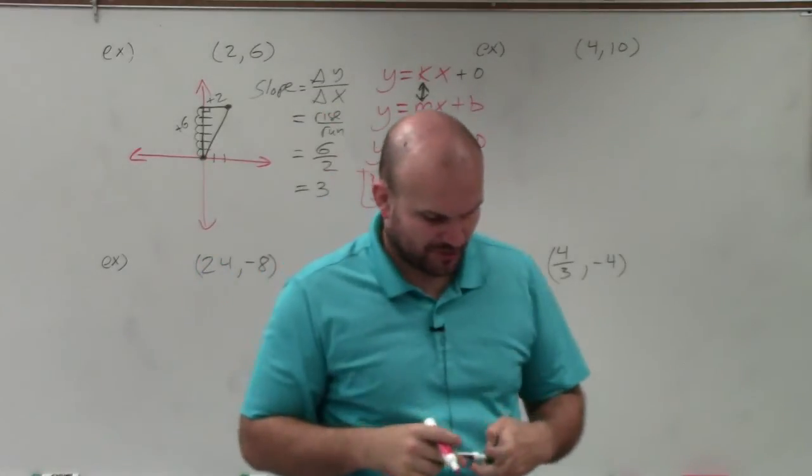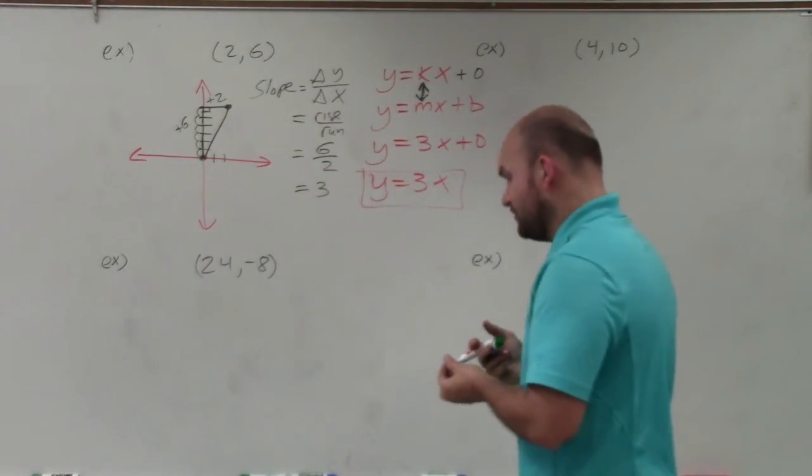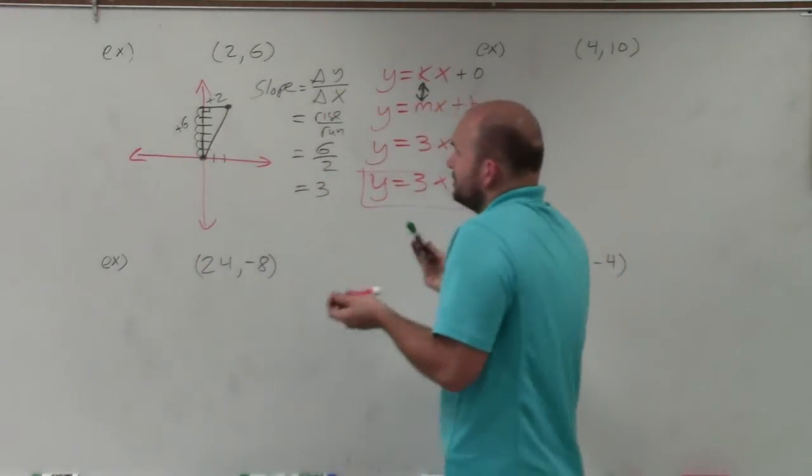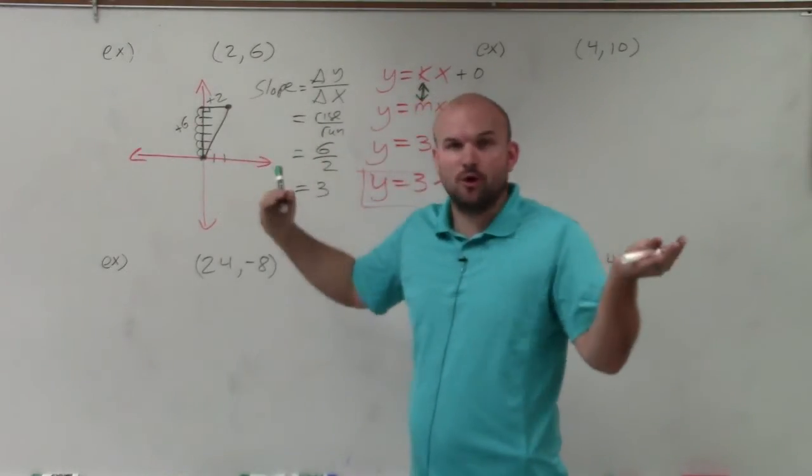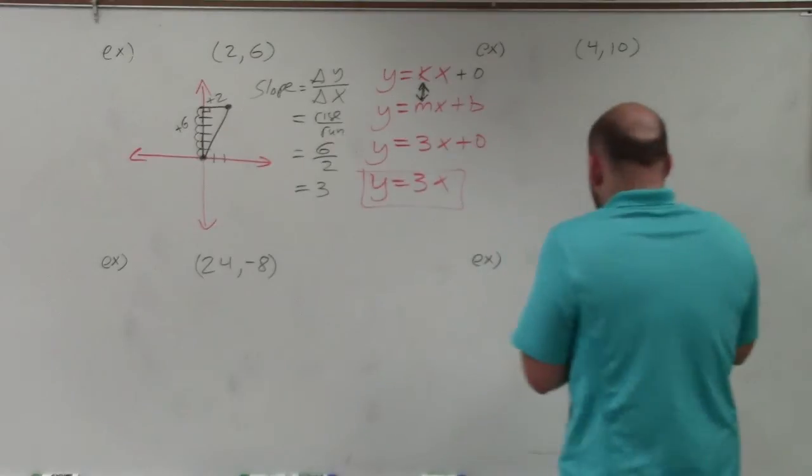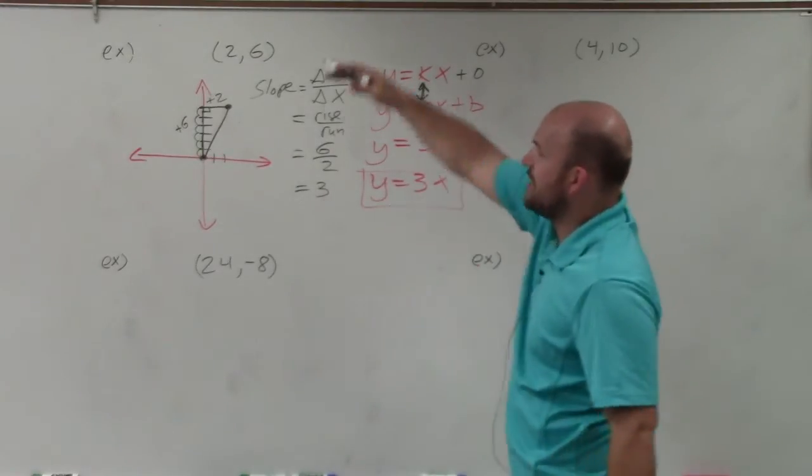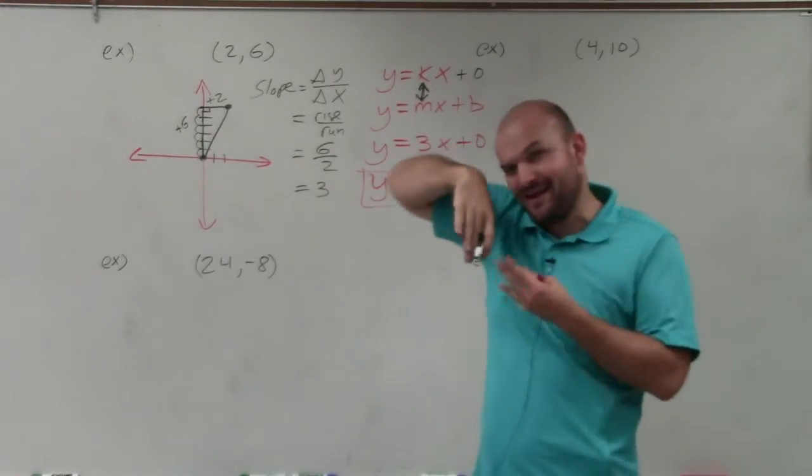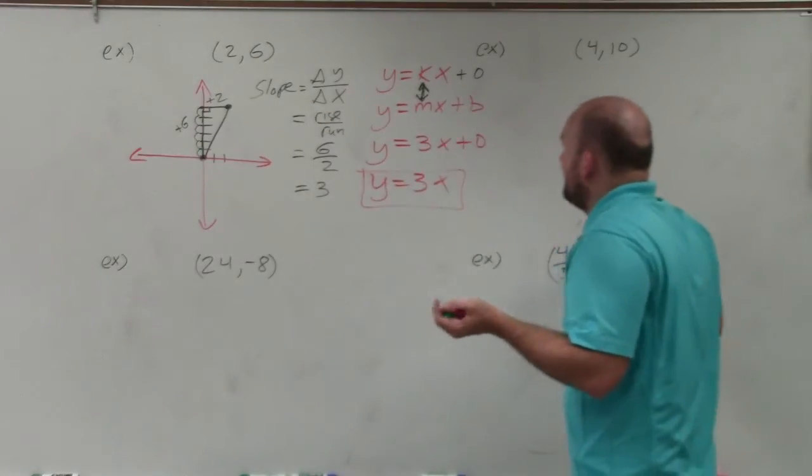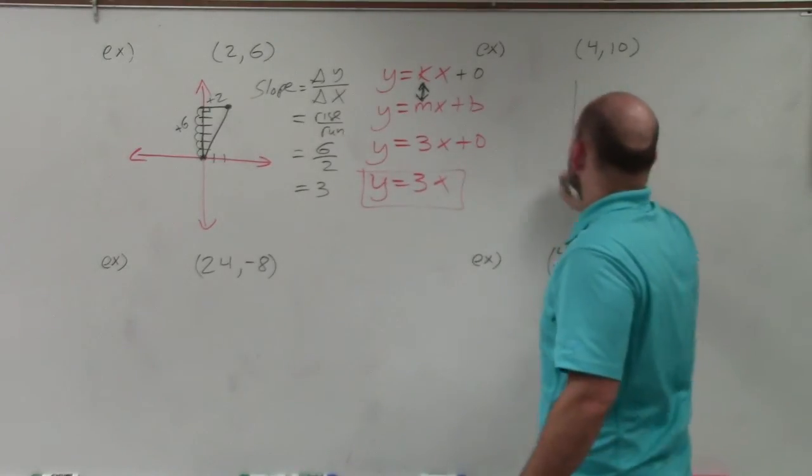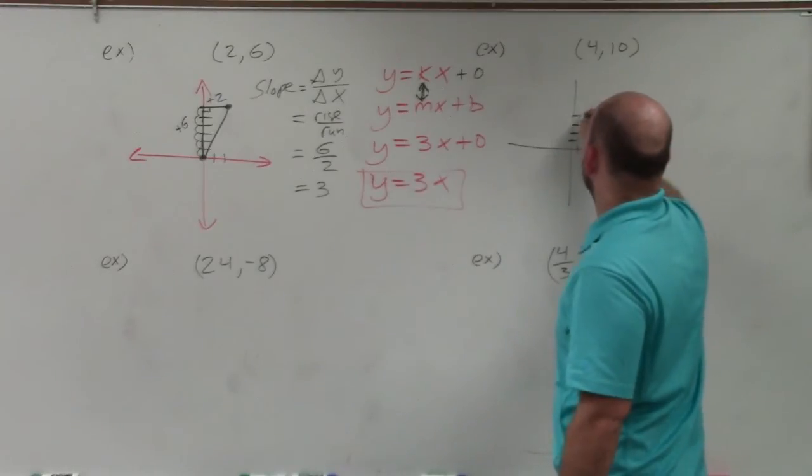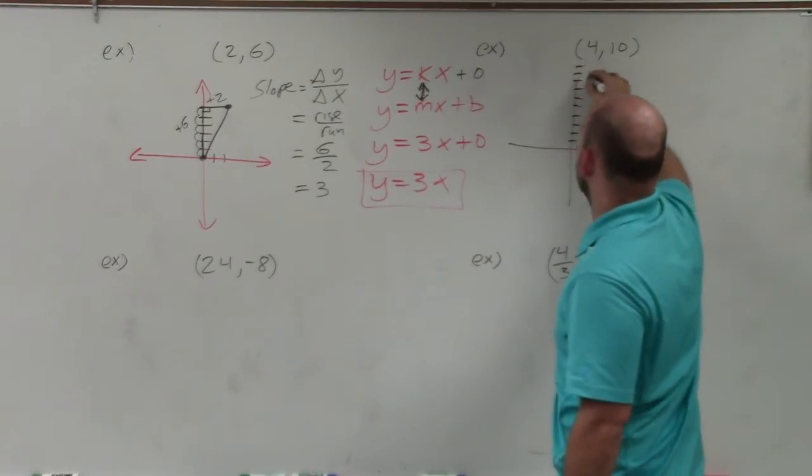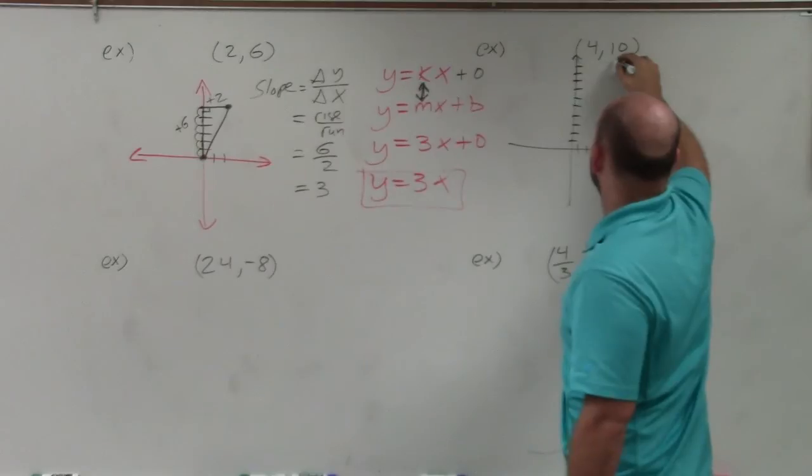Now, if you don't like graphing or you're having trouble with graphing, hopefully you can understand that really, all I'm doing by graphing it is using that to find my slope. So the other way you can think about this is if you don't want to graph or you're having trouble, basically I want you to understand that if you plot the point, you basically have two points.